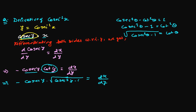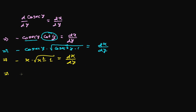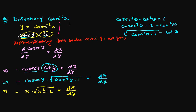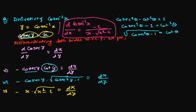Now we can substitute cosecant y as x, so we get minus x times the square root of x squared minus 1, equals dx over dy. Taking the reciprocal, dy over dx equals 1 over minus x times the square root of x squared minus 1. So the derivative of cosecant inverse x with respect to its angle is minus 1 divided by the angle times the square root of the angle squared minus 1. We can use this result as an identity.